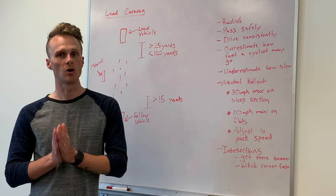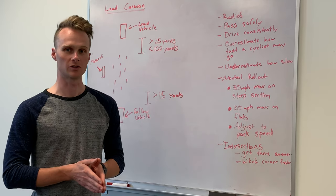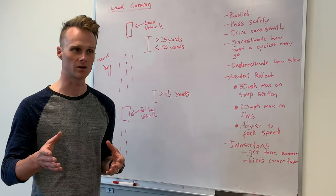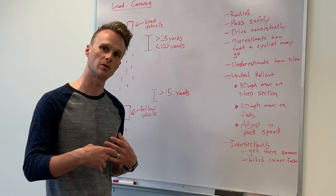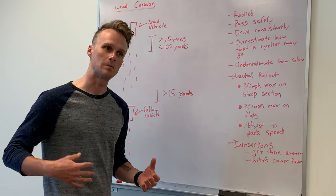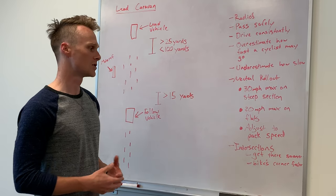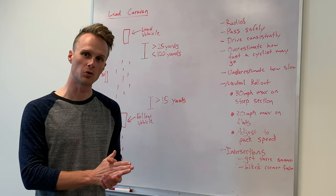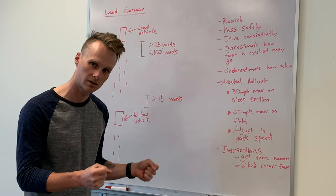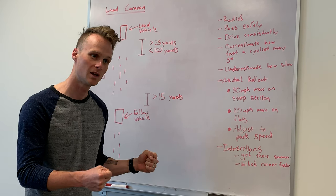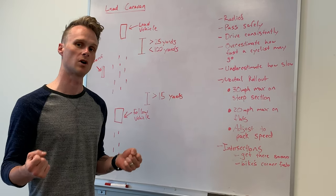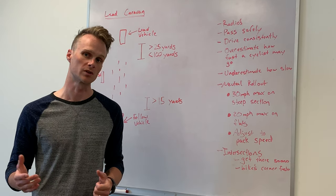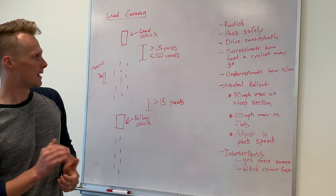Secondly, bikes are always going to corner faster than a vehicle. It's really easy to underestimate how quickly a bike can come through an intersection. As motorists, we're very used to slowing down a little bit more gradually and then peeling out of the turn a little bit more gradually. Cyclists in a race, we're going to go full bore towards that intersection as fast as we can, slow down at the last possible moment, and then as soon as we're out of the intersection, we're going to be speeding up to our typical speed again. So get through the corner, get through the intersection as quickly as possible.